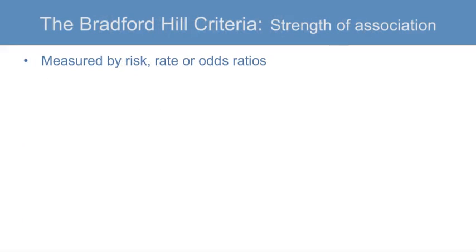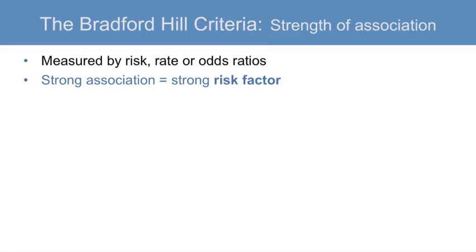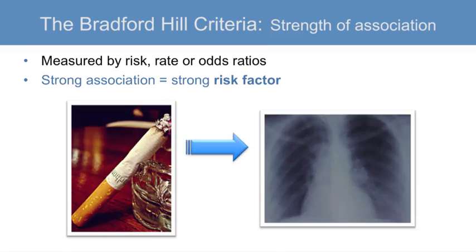The first criterion is strength of association. Strength of association between the exposure of interest and the outcome is most commonly measured via risk ratios, rate ratios, or odds ratios. Hill believed that causal relationships were more likely to demonstrate strong associations than were non-causal agents. Strong associations occur when an exposure is a strong risk factor, and there are few other risk factors for the disease. For example, Bradford Hill pointed out that smoking is a strong risk factor for lung cancer. Smokers are 15 to 30 times more likely to have lung cancer or die due to lung cancer compared with people who do not smoke. Studies have also shown that the risk of lung cancer may be increased 20-fold or more when heavy smokers are compared with non-smokers.